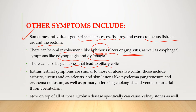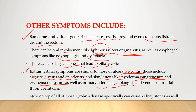Some extra-intestinal symptoms are similar to those of ulcerative colitis, including arthritis, uveitis, episcleritis, and skin lesions like pyoderma gangrenosum. Pyoderma gangrenosum is often associated with autoimmune diseases such as ulcerative colitis, Crohn's disease, and arthritis. Erythema nodosum, as well as primary sclerosing cholangitis and venous or arterial thromboembolisms, are also common in both Crohn's disease and ulcerative colitis.